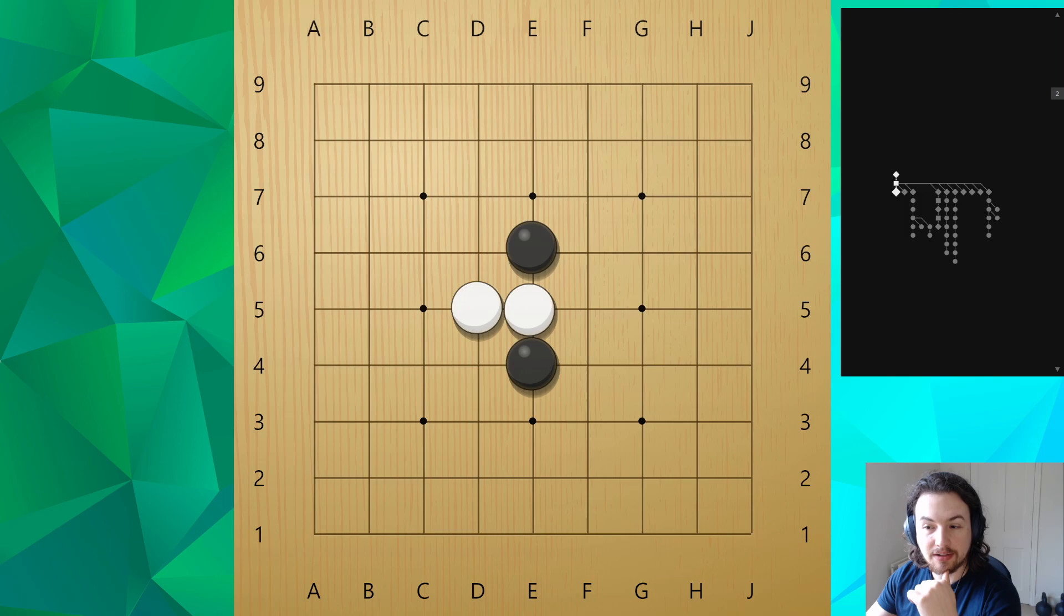So here for example we have black stones. We might have seen the shape a little bit already based on some previous games, but say that it's black to play. Where should black play? Often I find that players will completely miss this f5 move here, like this.